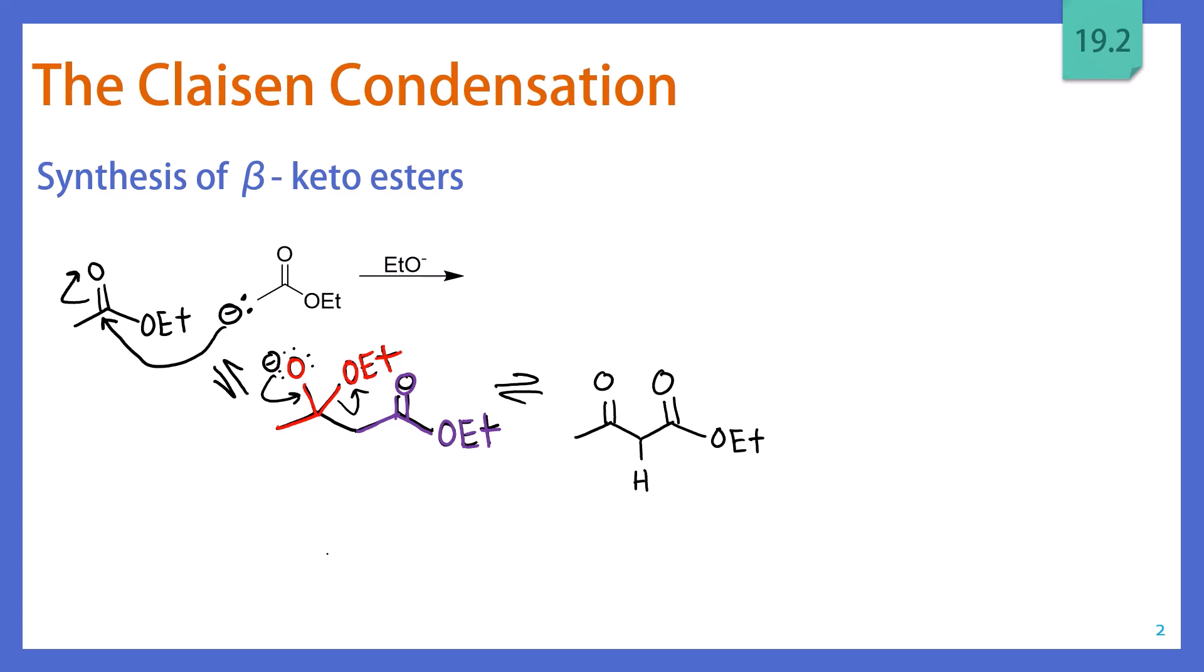So once we've created this beta-ketoester, we have now made a much more acidic proton in between the two carbonyls. So the ethoxide that we liberated just a second ago by kicking it out is going to come and deprotonate our structure, giving us yet another enolate. But the reason this is important is that we've also created ethanol, and that hydrogen on the ethanol has a higher pKa than the hydrogen of the beta-ketoester. And so that's actually favoring the weaker acid in this situation.